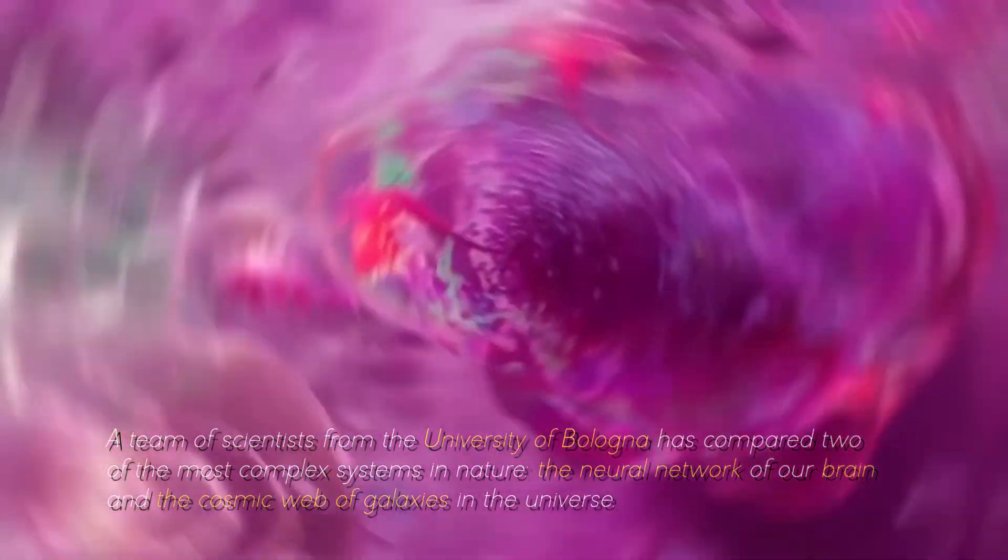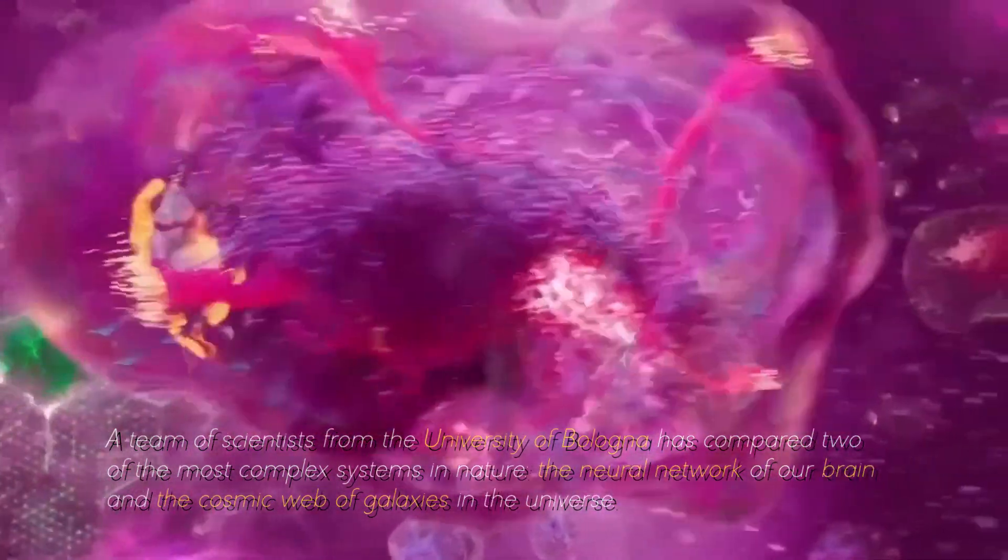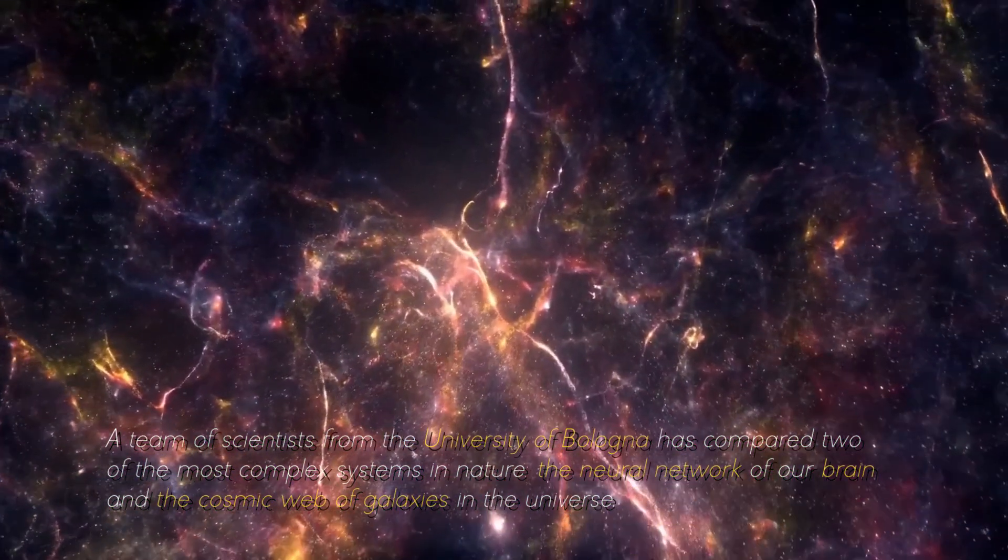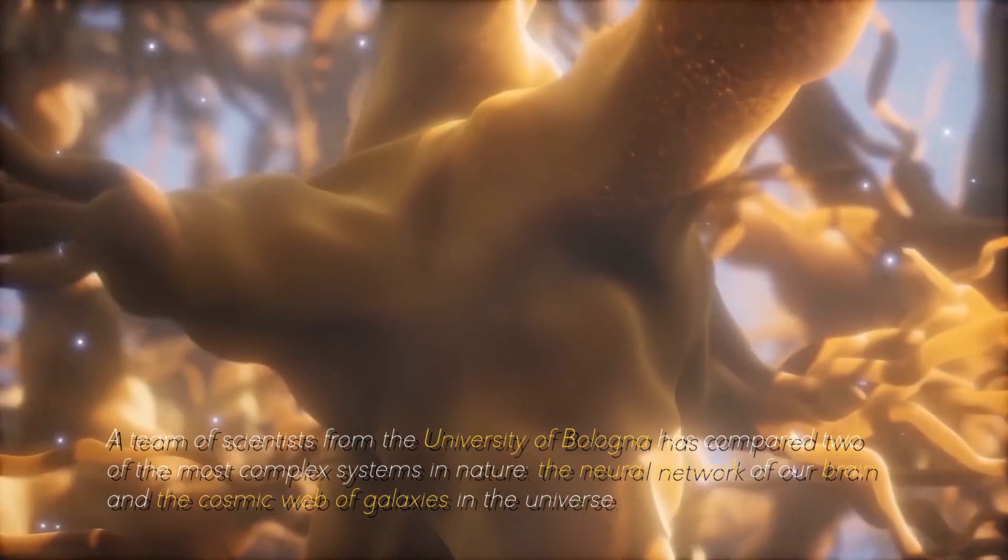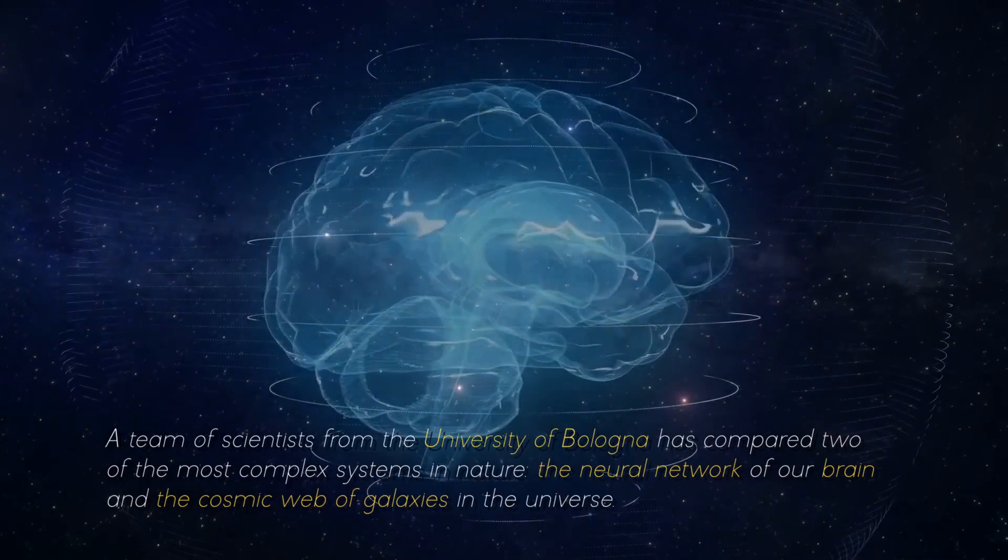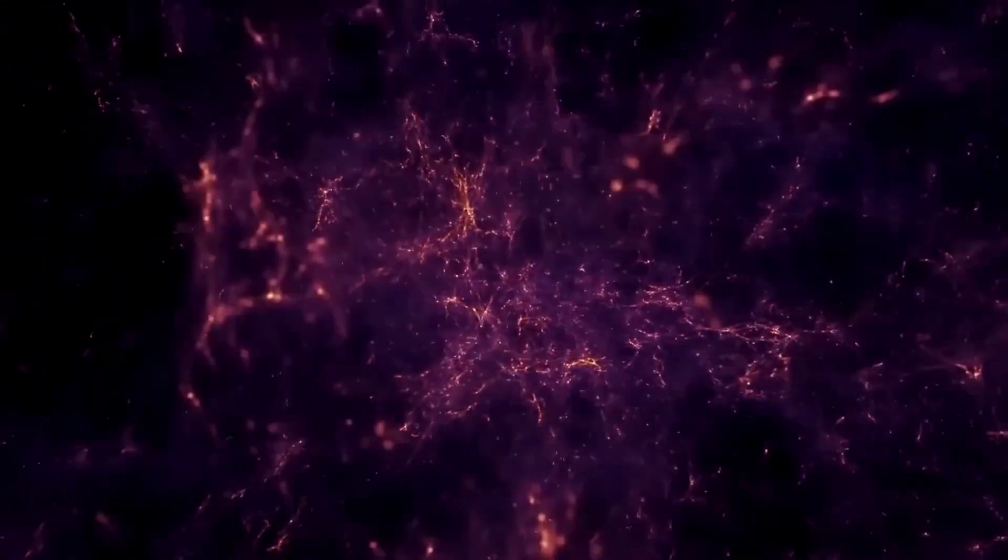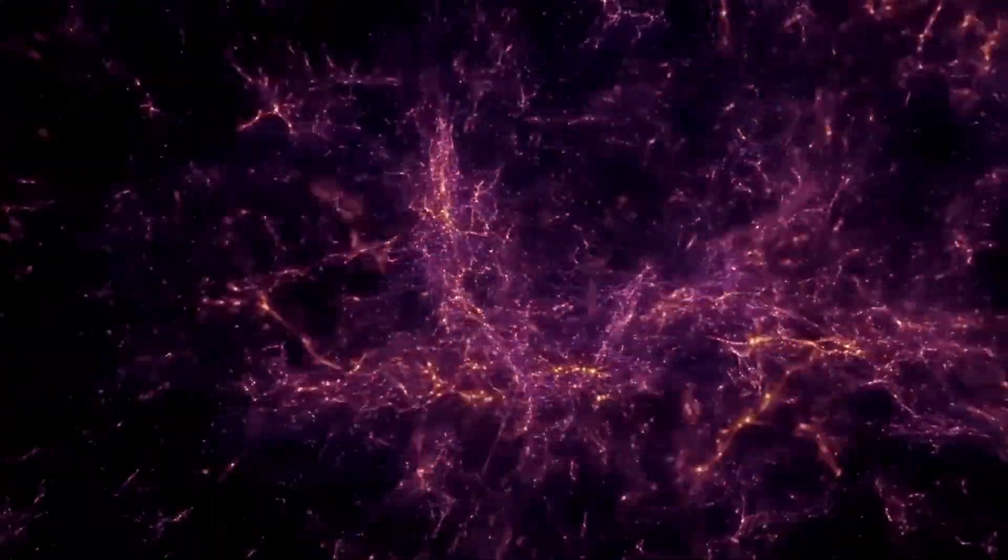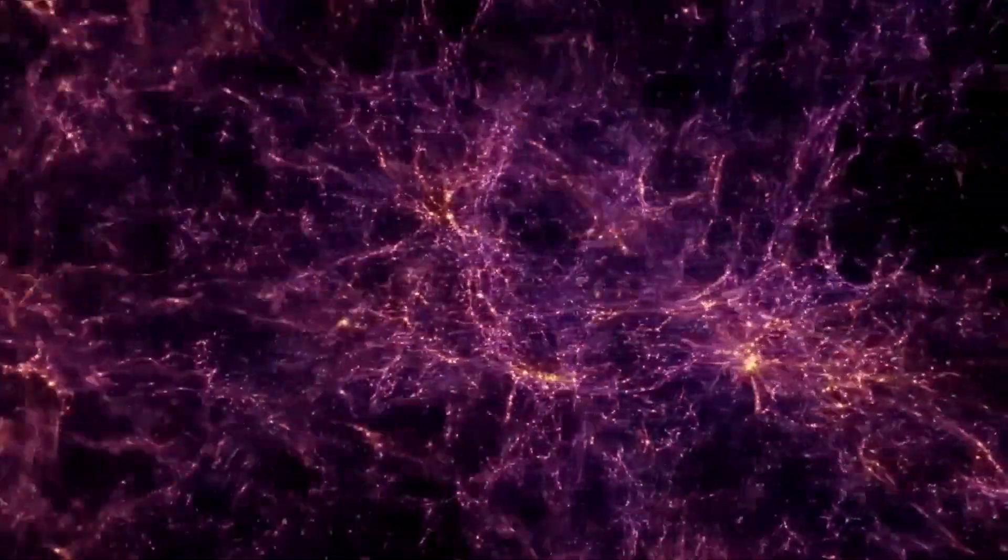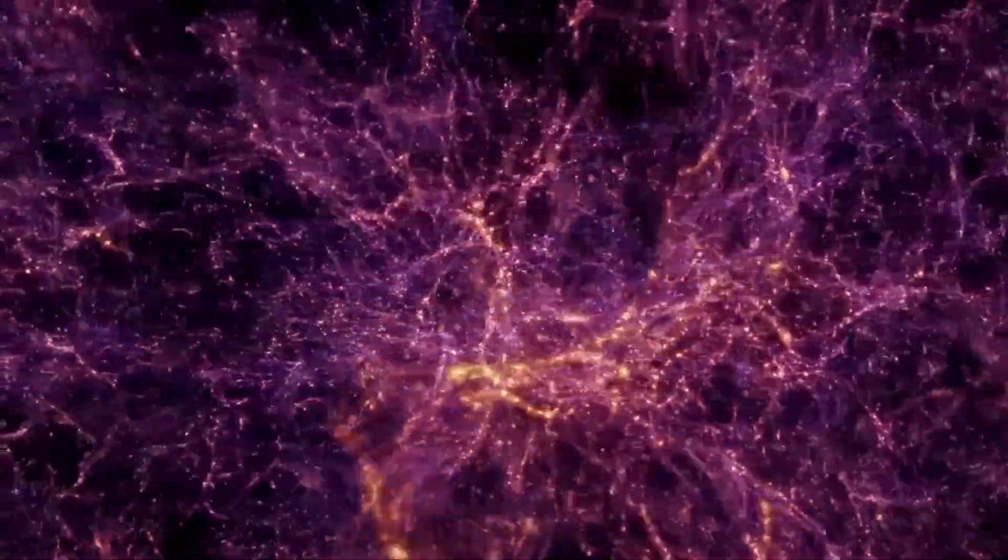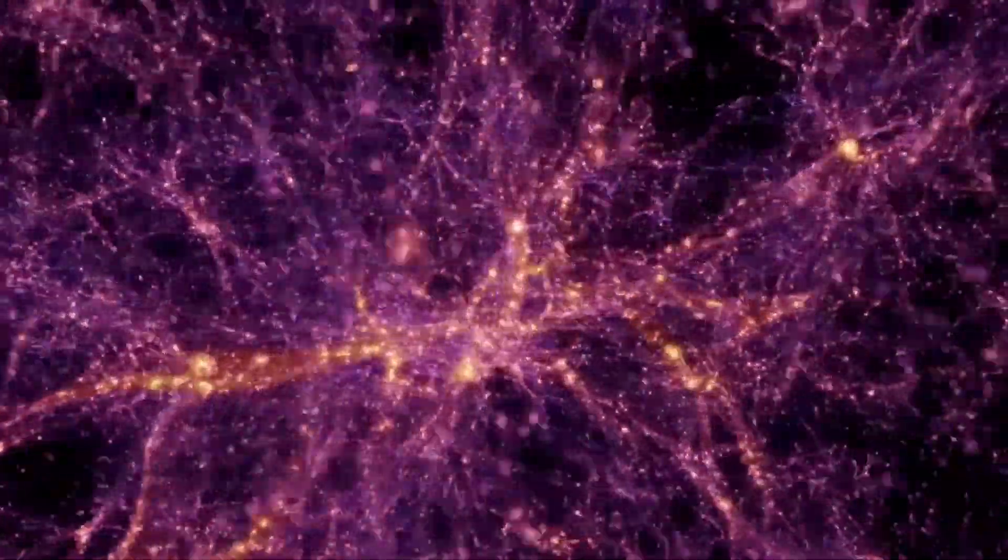A team of scientists from the University of Bologna has compared two of the most complex systems in nature, the neural network of our brain and the cosmic web of galaxies in the universe. What did they discover? That they are incredibly similar, and not just as they look if we compare a human neuron with a cluster of galaxies.